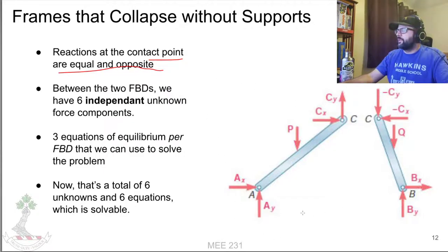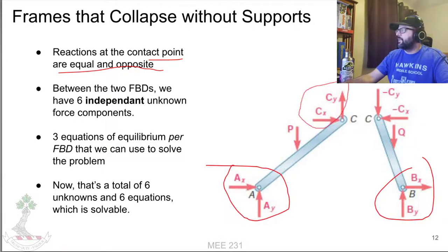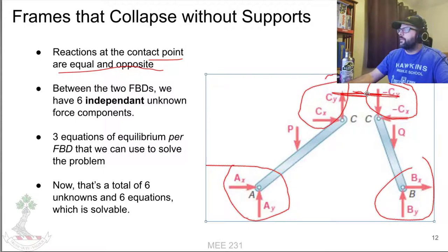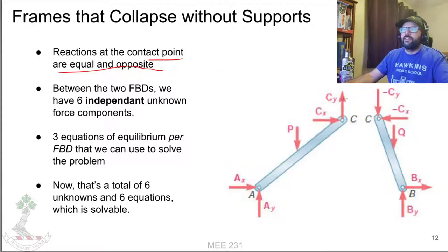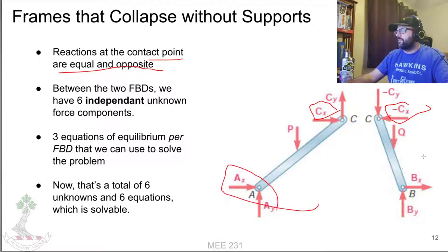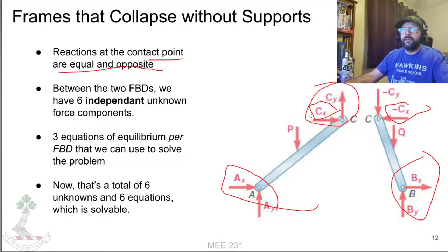Those reactions at the contact points are equal and opposite. Now we've got two free body diagrams and six independent unknowns. We got six unknowns and two free body diagrams, so we have three equations of equilibrium per free body diagram. Total of six unknowns, total of six equations. We can solve for that.